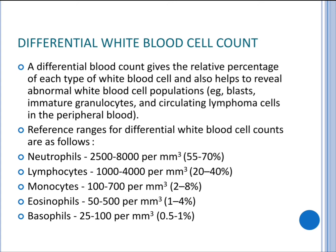A differential blood count gives the relative percentage of each type of white blood cell and helps reveal abnormal white blood cell populations, such as blast cells, immature granulocytes, and circulating lymphoma cells in the peripheral blood. Reference ranges for differential white blood cell count are as follows: neutrophils 2,500 to 8,000 per millimeter cubed, which is 55 to 70 percent of total white blood cells; lymphocytes 1,000 to 4,000 per millimeter cubed, 20 to 40 percent.